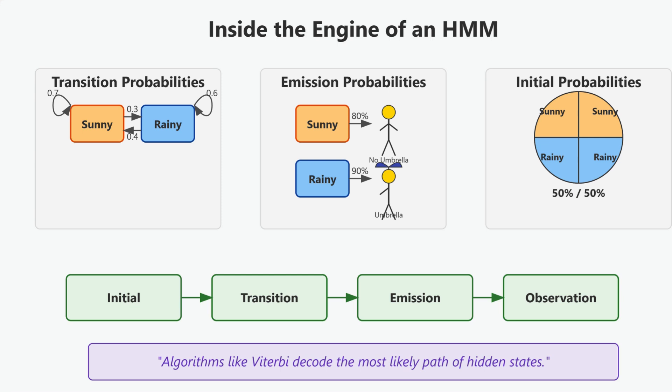Initial probabilities: this tells us how likely each state is at the start. Maybe there's a 50-50 chance of starting on a sunny or rainy day.